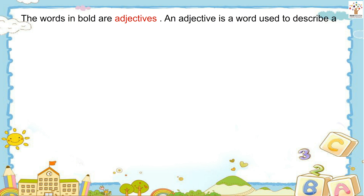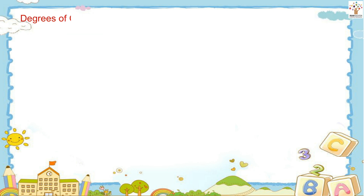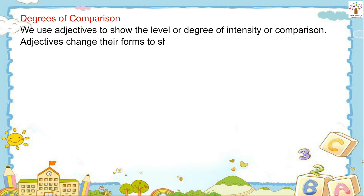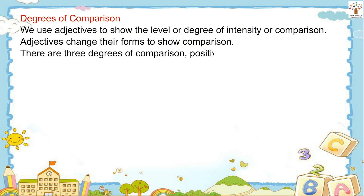An adjective is a word used to describe a noun or a pronoun. Degrees of Comparison: We use adjectives to show the level or degree of intensity or comparison. Adjectives change their forms to show comparison. There are three degrees of comparison: positive, comparative, and superlative.